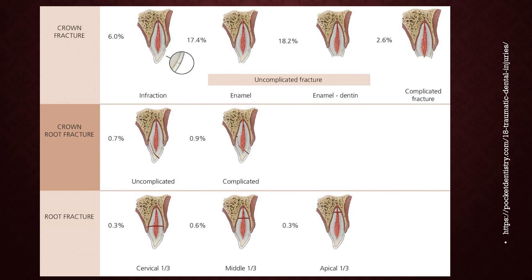Infraction involves the enamel only. Uncomplicated fractures involve only enamel, or enamel and dentine. Complicated fractures involve the pulp. Crown-root fractures can be uncomplicated or complicated with involvement of the pulp and a larger portion of the tooth and root. Root fractures can involve the cervical one-third, middle one-third, or apical one-third of the root.